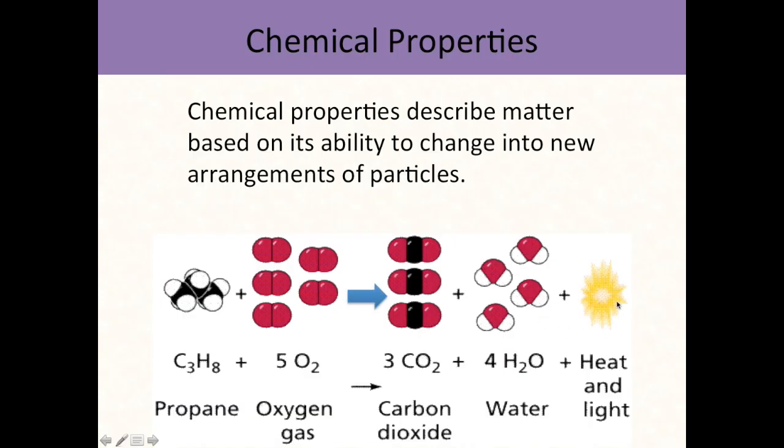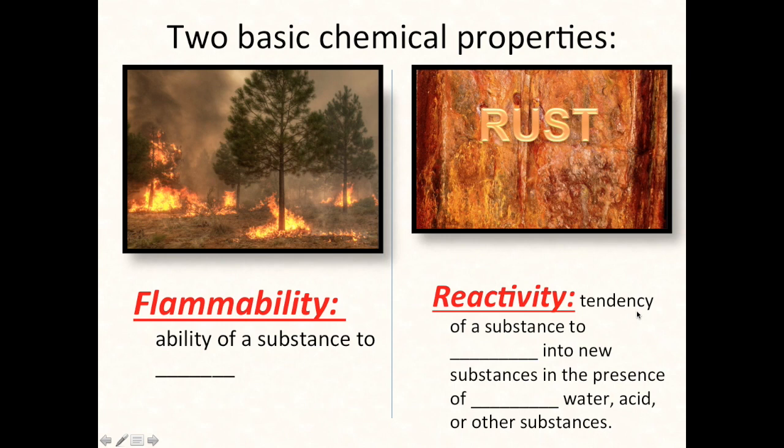Chemical properties describe matter based on its ability to change into new arrangements of particles. For example, here's burning propane. Propane is three carbons and eight hydrogens. You combine it with oxygen gas and everything remixes, recombines, and you end up with carbon dioxide, water, and heat and light. This is a rearrangement of particles, called a chemical reaction, an exothermic reaction, because it's giving off heat and light.